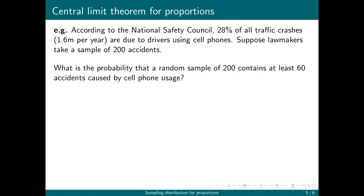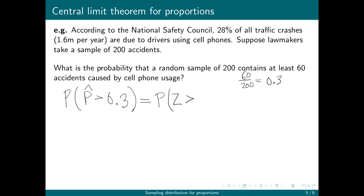What is the probability that a random sample of 200 accidents contains at least 60 accidents caused by cell phone usage? We're really asking: what is the probability that our sample proportion is greater than 60 out of 200, which is 0.3? So we're asking what is the probability that P-hat is greater than 0.3. Since these are normally distributed, we need the Z-score: (0.3 minus 0.28) divided by the standard deviation 0.0317, giving a Z-score of 0.6309.